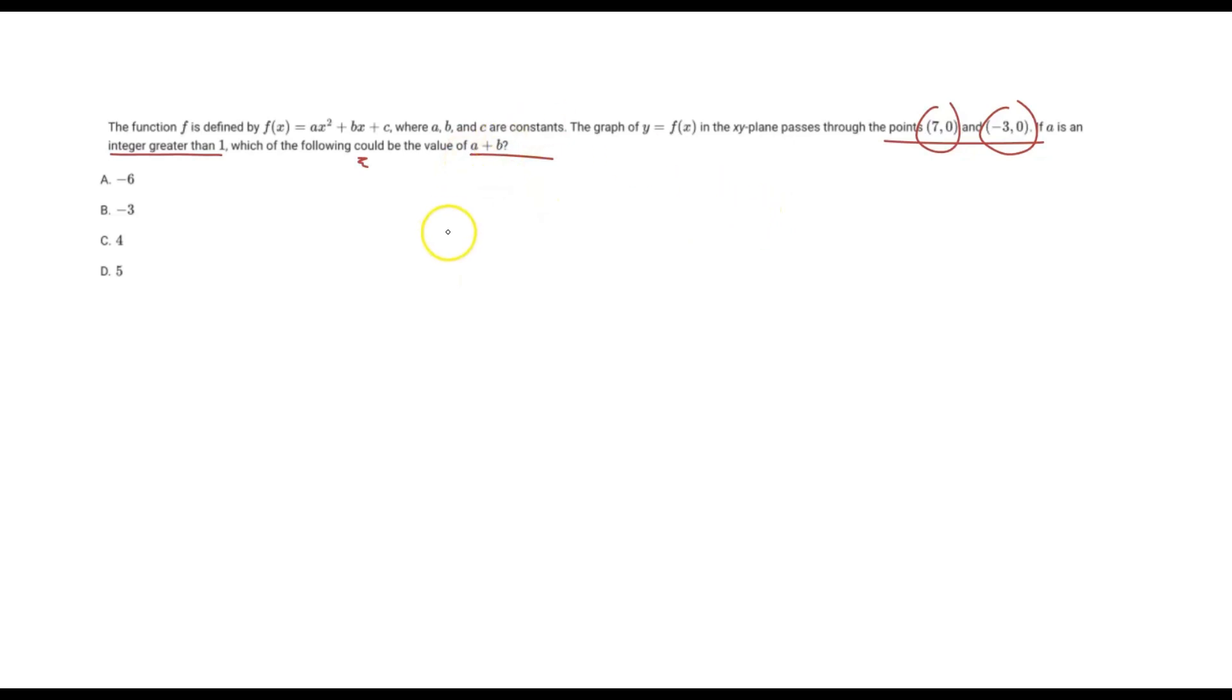So first off, let's just write what we know. We know f(x) is our function, and a is an integer greater than 1, except we don't know what it is. So let's just write a to represent it. However, what we do know are the roots, and that is (7,0) and (-3,0).